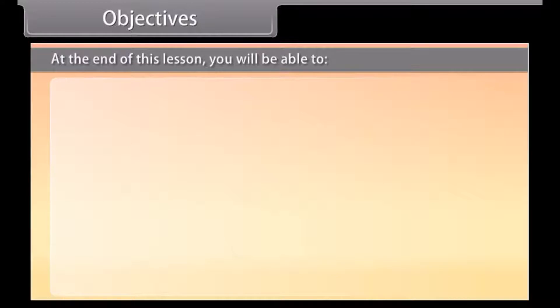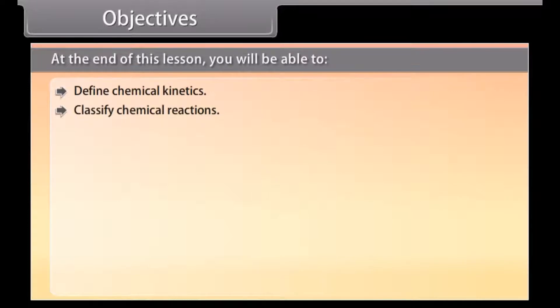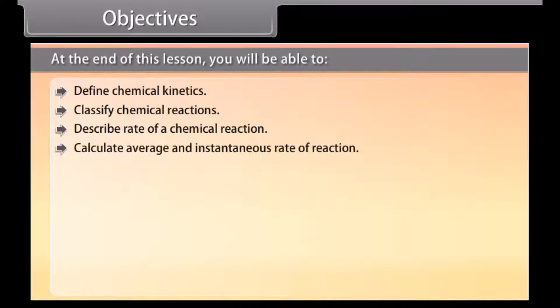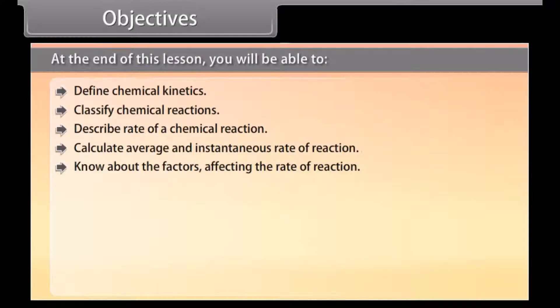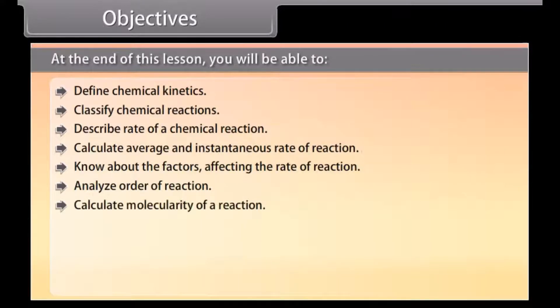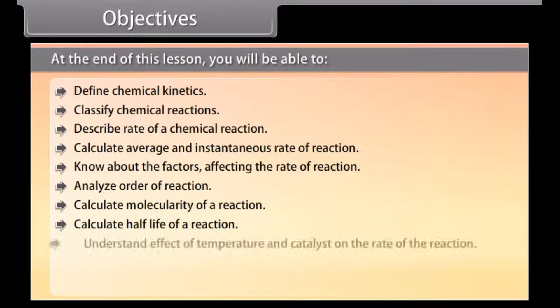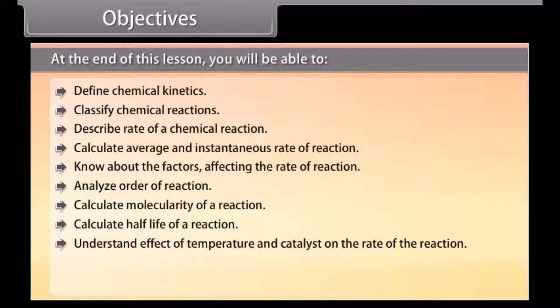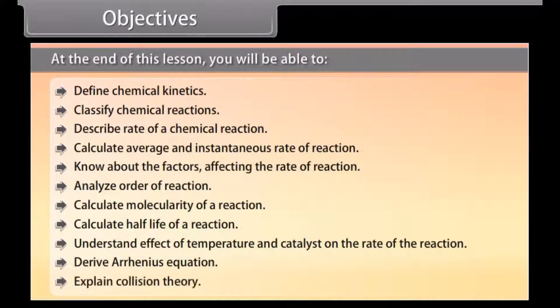Objectives. At the end of this lesson, you will be able to: define chemical kinetics; classify chemical reactions; describe rate of a chemical reaction; calculate average and instantaneous rate of reaction; know about the factors affecting the rate of reaction; analyze order of reaction; calculate molecularity of a reaction; calculate half-life of a reaction; understand effect of temperature and catalyst on the rate of the reaction; derive Arrhenius equation; and explain collision theory.